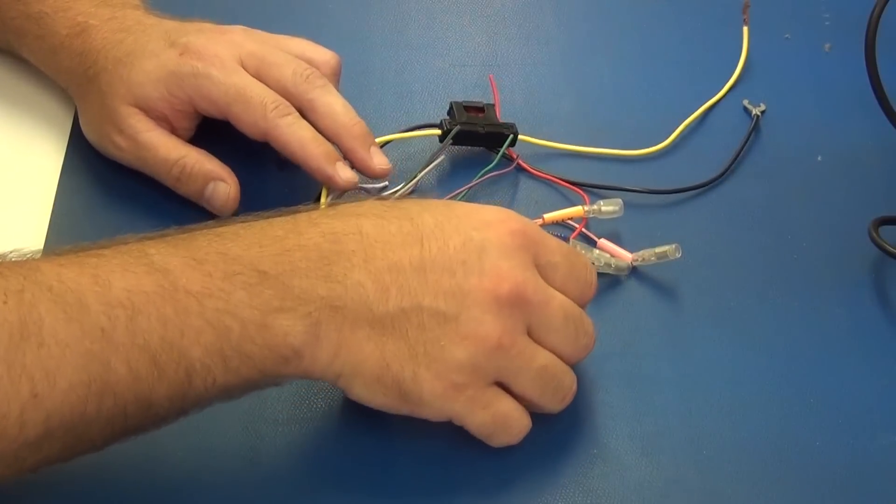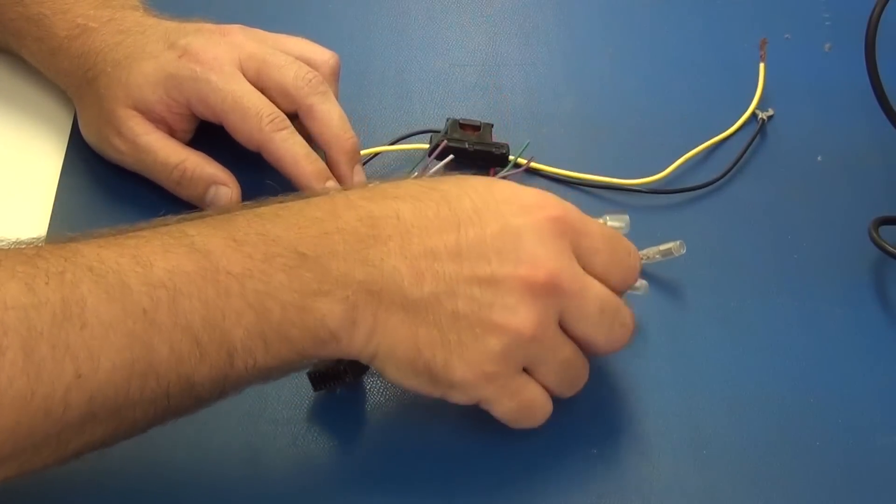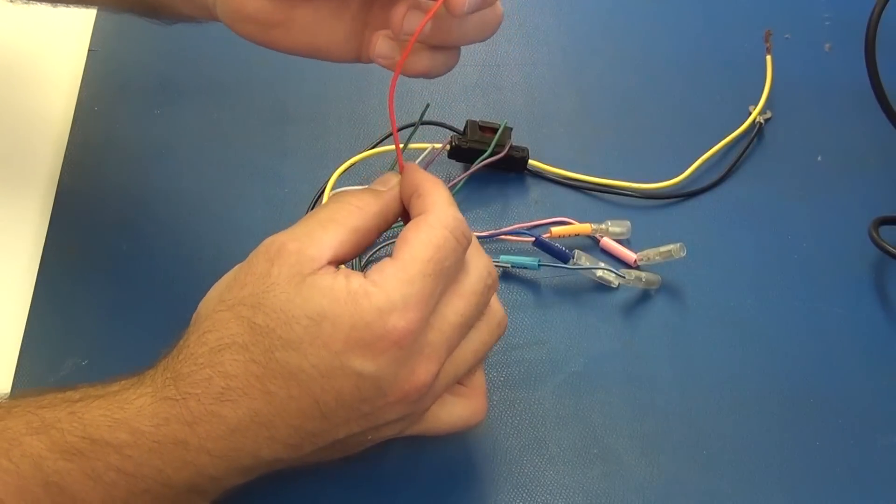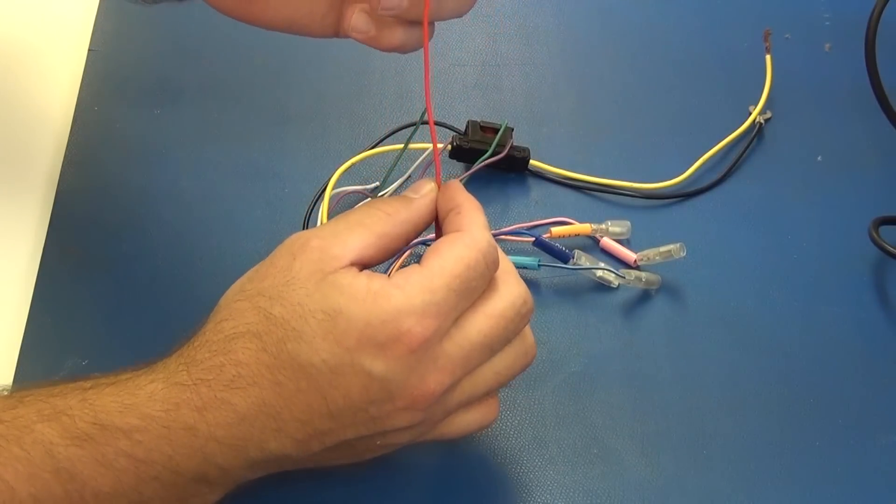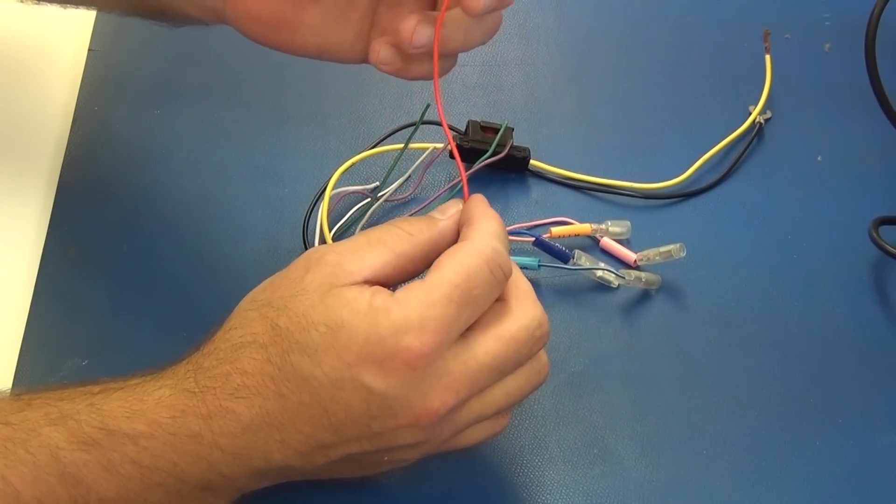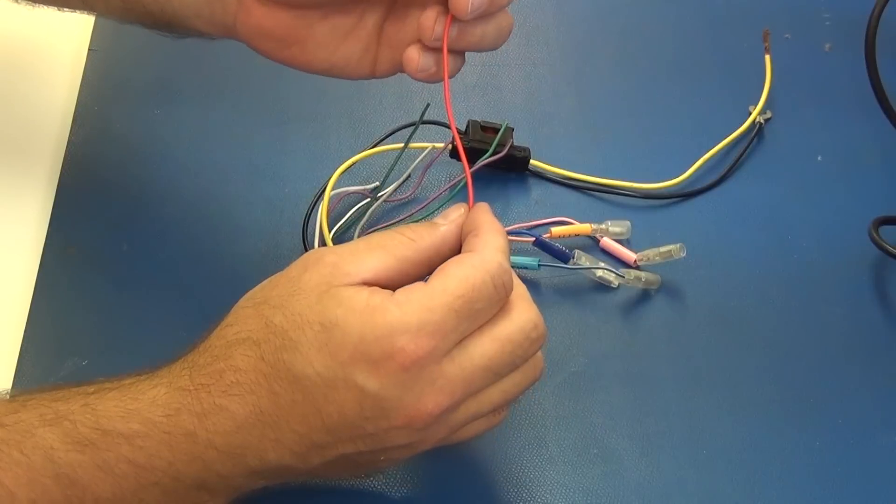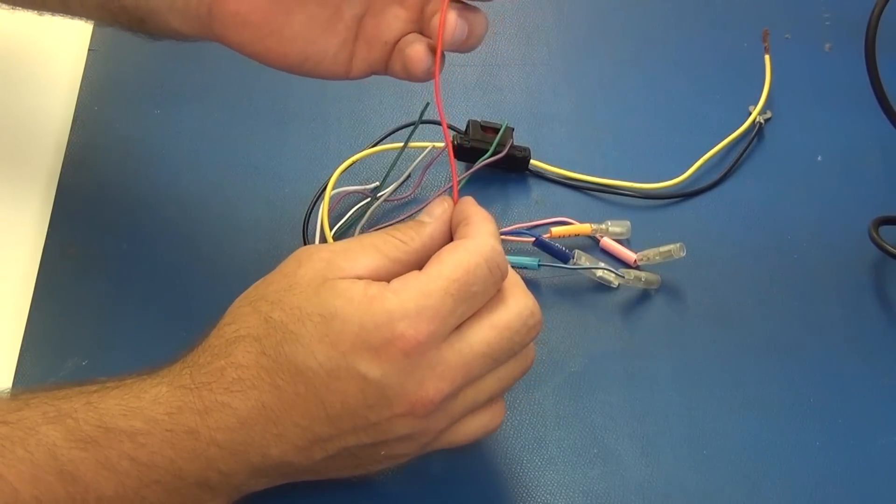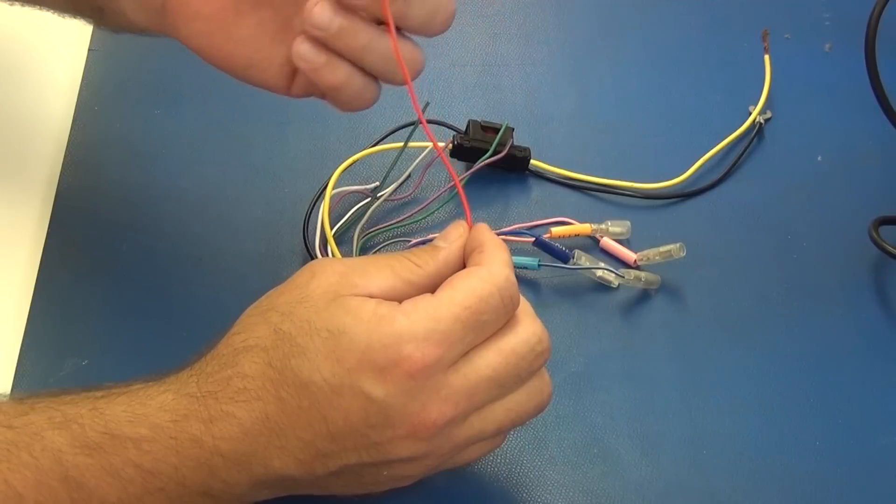The next one is our red wire, and this is our switched power wire. This comes on with the key or the accessory position of the vehicle. The reason we have this is so when you decide to stop driving, park in the driveway, pull the key out, the car stereo goes off, whether you turn the power off or not. This is our switched lead that turns the unit on and off with the key.